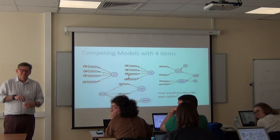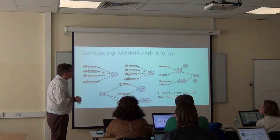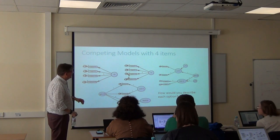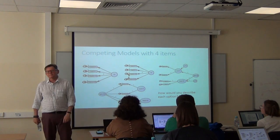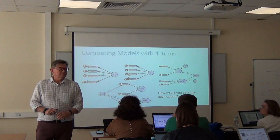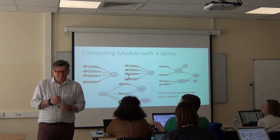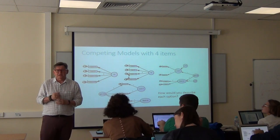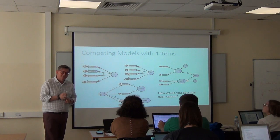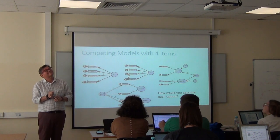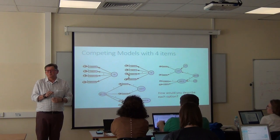Why did you choose to constrain the third regression path and not another one in model number two, and if you chose a different path, would it change anything? I can't imagine that the C-value location matters. You just chose randomly and it doesn't matter? I don't think it matters — it's a nice little empirical question: run it here, there, and see what you get.